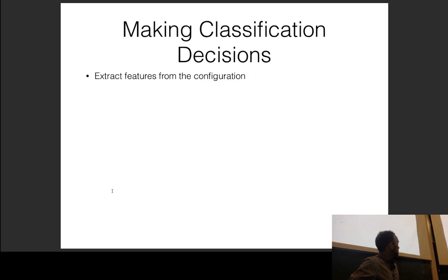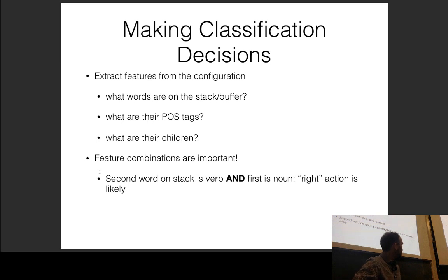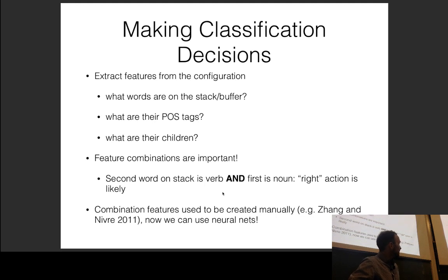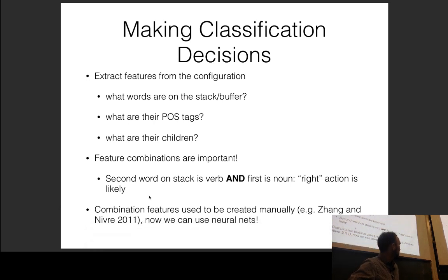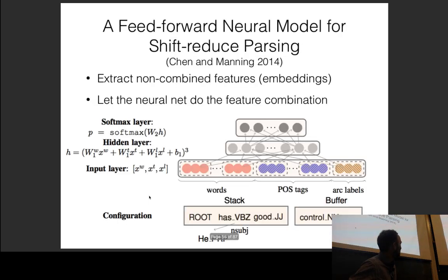We extract features from the configuration: what words are on the stack and buffer, their part-of-speech tags, their children. Feature combinations are important — for example, if we know the second word on the stack is a verb and the first is a noun, the reduce-right action is likely correct since nouns are commonly children of verbs. Previously, you had to create feature combinations manually — the Zhang and Nivre paper is entirely about designing better features and raised state of the art by about two points.